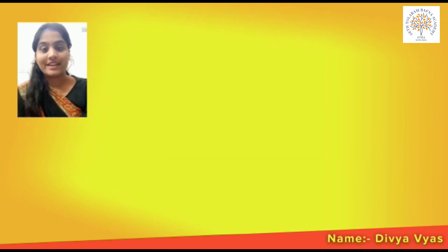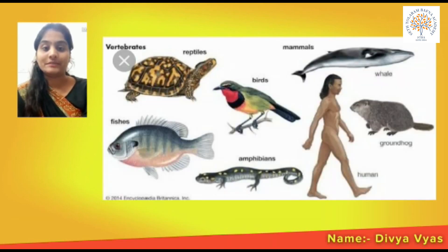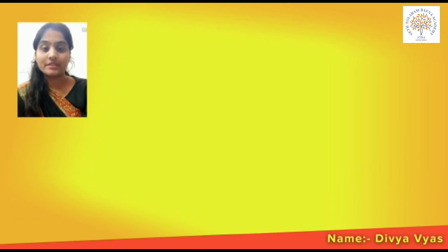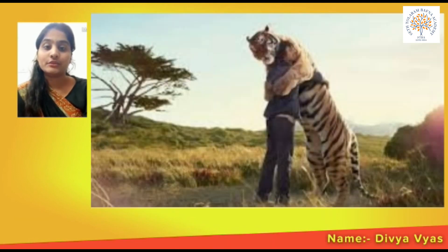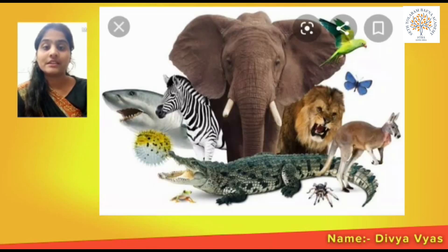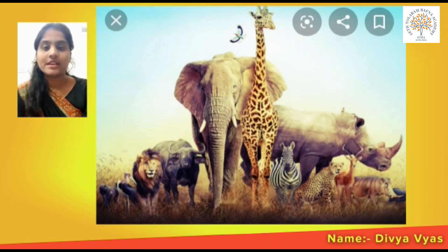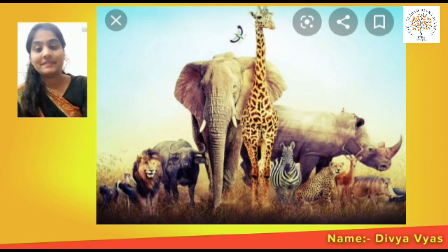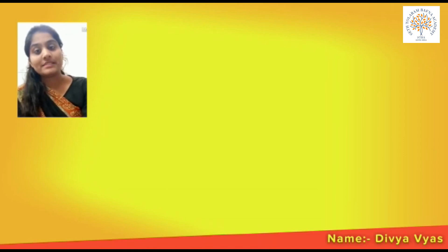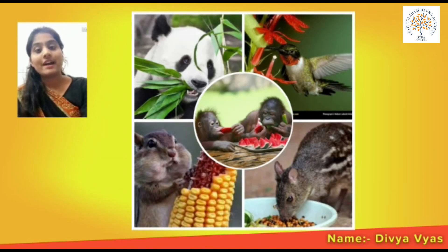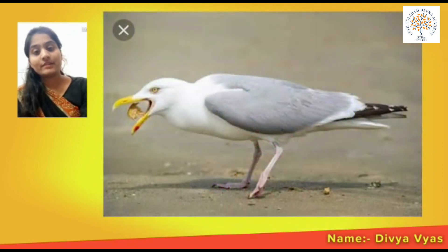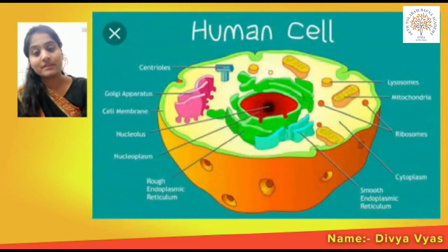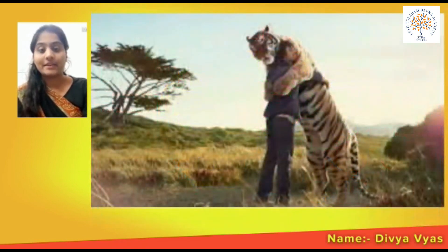Human beings are classified as belonging to the animal kingdom. Do you know what the animal kingdom is? The animal kingdom includes animals and human beings both. It is one of six kingdoms in the natural world and contains lots of species of animals and human beings. Animals are heterotrophic — they must eat food — and they are multicellular, meaning they are made of many cells. Cells are the structural unit of animals and living beings, including human beings.